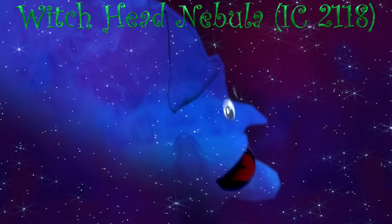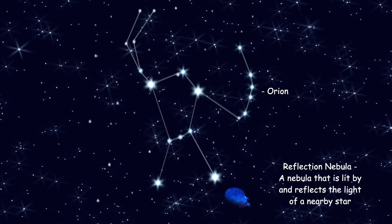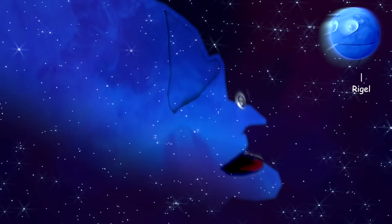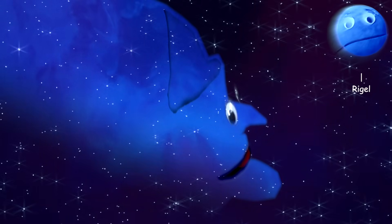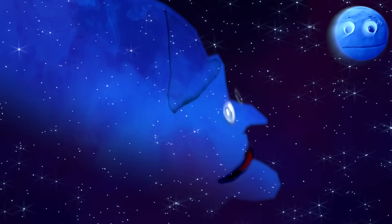I'm the Witch Head Nebula, IC-2118. A reflection nebula in the Orion constellation is where I can be seen. I'm very faint because my glow comes from the light of Rigel reflecting off me. My eerie blue glow from the blue star reflecting off my dust makes me look scary.